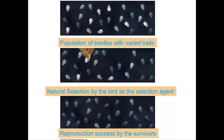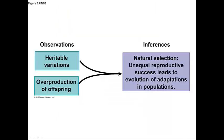Darwin's theory is based upon two big observations. Observation one: heritable variations, or individual variations. This is the idea that individuals in a population will vary in their traits, many of which are inherited from parent to offspring. In the case of our bugs, it was the color of the bug.